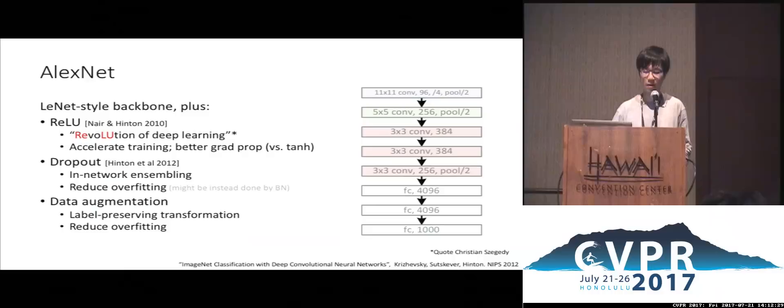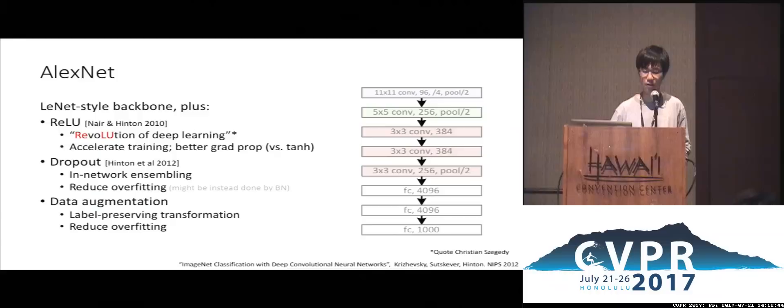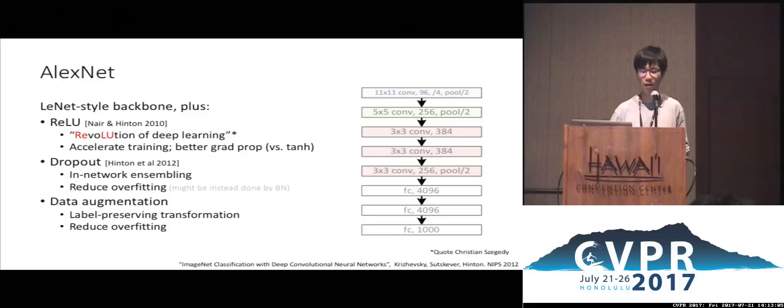Another key contribution of AlexNet is data augmentation — label-preserving transformations such as random cropping, random scaling, or flipping, which virtually create more data from existing data. Even with 1 million ImageNet images, the data is still limited compared to the network size. Data augmentation is one of the key reasons for the recent success of neural networks and helps reduce overfitting.